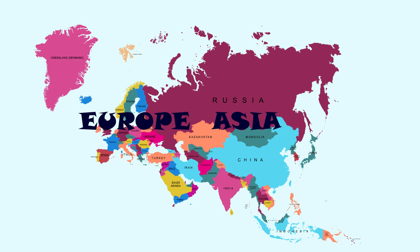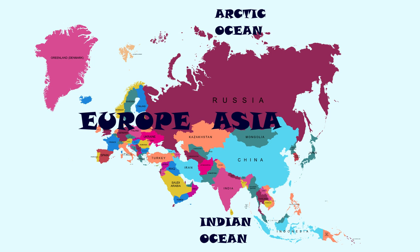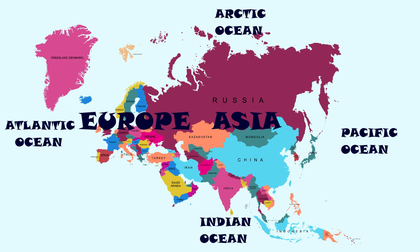Eurasia is the only continent on Earth washed by four oceans: in the south by the Indian Ocean, in the north by the Arctic Ocean, in the west by the Atlantic, and in the east by the Pacific Ocean.